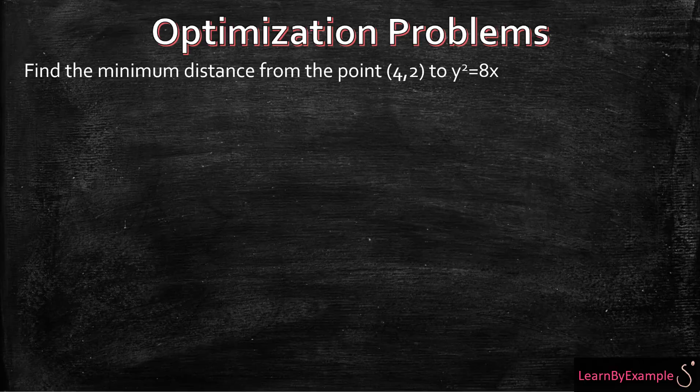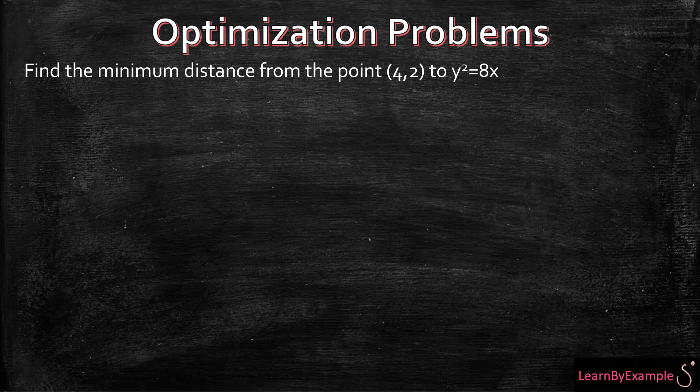Okay everyone, so we have a bit of a different problem once again. The question says find the minimum distance from the point (4,2) to y squared is equal to 8x.